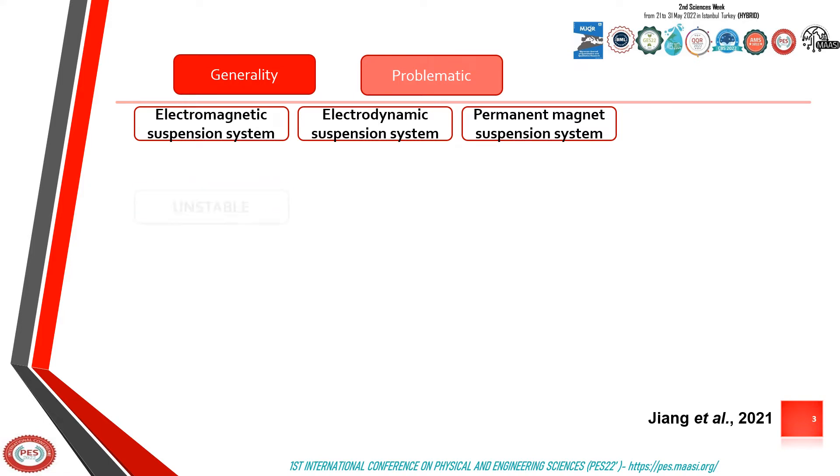Electromagnetic suspension is unstable and requires powerful levitation control systems. Electrodynamic suspension systems cannot provide suspension force in the static state.